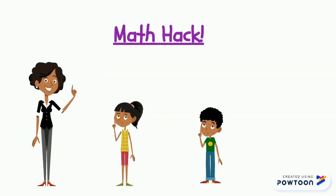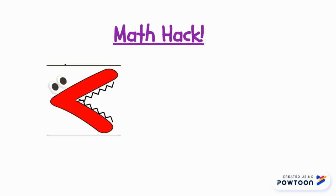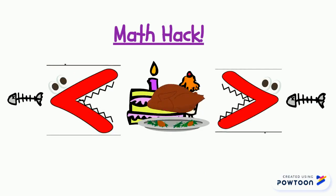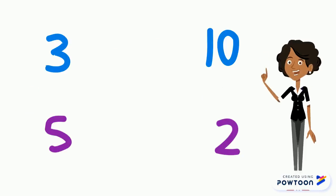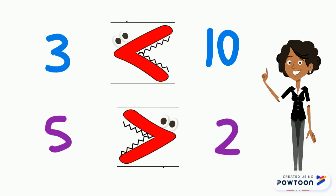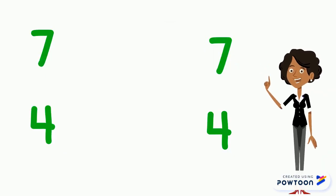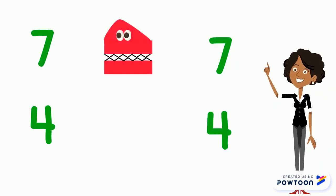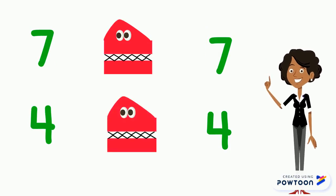Listen to this mathematics hack. Imagine these signs were hungry alligators. They like big meals and not small ones. So they always open their mouths to the bigger number. Look, do you see the big gator teeth being used to chomp on the bigger numbers? See, he always turns his mouth to the bigger number no matter which direction it is in. But when the numbers are the same, the gator can't chomp, so his mouth is closed to make the equal sign.